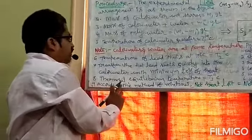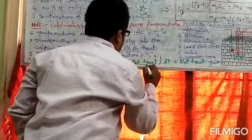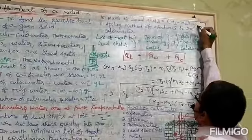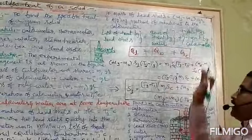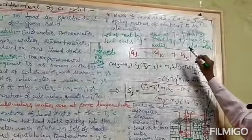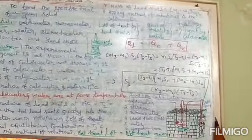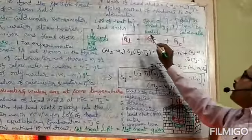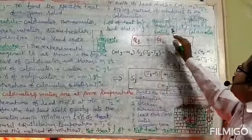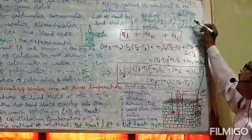Point number 9: According to the method of mixtures, net heat lost is equal to net heat gain. According to the fundamental principle of calorimetry, one body loses heat and the other body gains heat when the two bodies are in thermal contact. That is, lead shots lose heat.